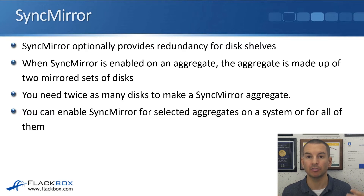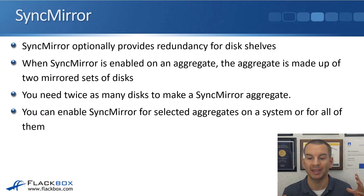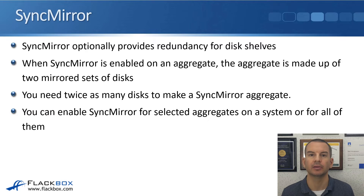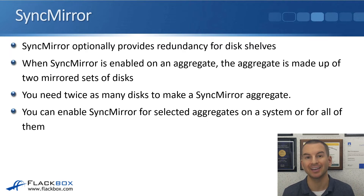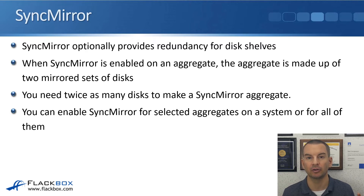Because it's mirrored across two different sets of disks, you need twice as many disks to make a SyncMirror aggregate as a non-SyncMirror aggregate. This is why SyncMirror is optional — it requires twice the amount of disks. You can enable SyncMirror for selected aggregates on a system, for all of them, or for none of them.